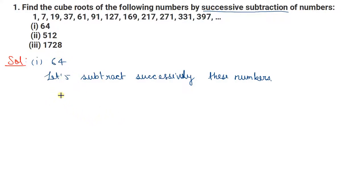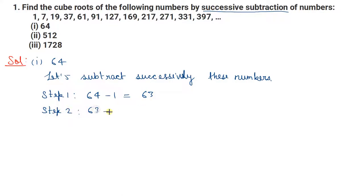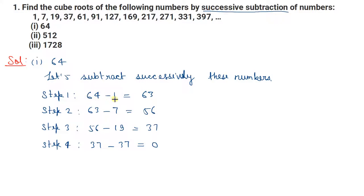Let us write the steps. Step 1: 64 minus 1 = 63. Step 2: 63 minus 7 = 56. Step 3: 56 minus 19 = 37. Step 4: 37 minus 37 = 0. तो आप देख रहे हैं कि 64 में से 1 minus किया, 63 में से 7 minus किया, 56 में से 19 minus किया, और 37 में से 37 minus करने पर zero आ गया।